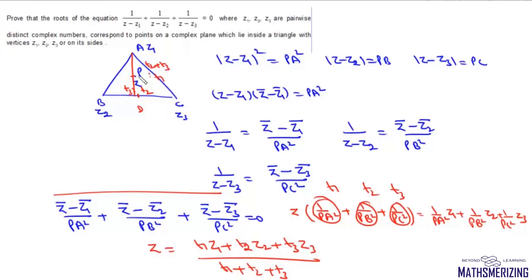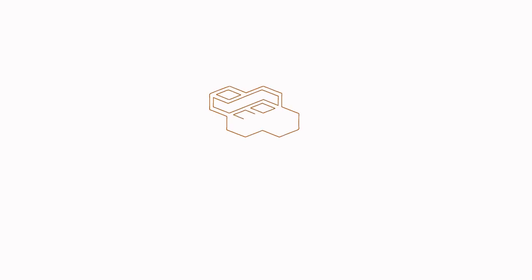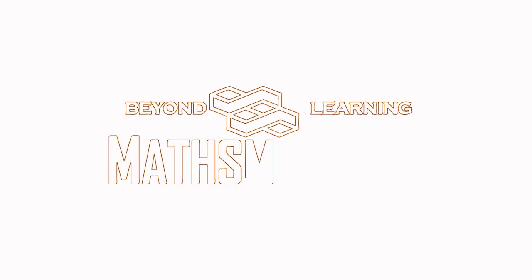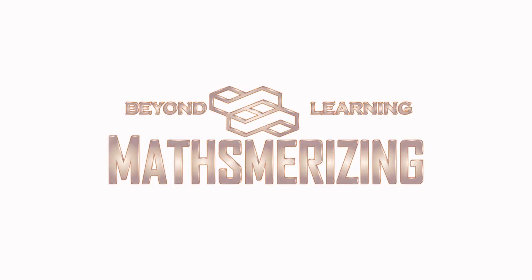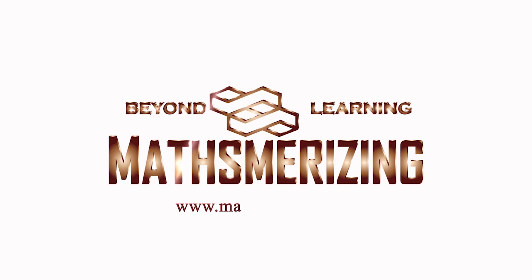Using the section formula, there is a point D on side BC which divides BC in the ratio t3 to t2. Then considering A and D, we can show that P divides AD in the ratio t2 plus t3 to t1. Therefore, the point P, represented by z, lies either inside the triangle or on its sides.